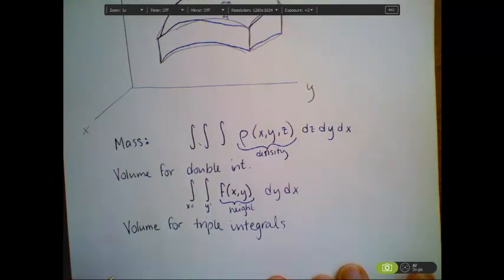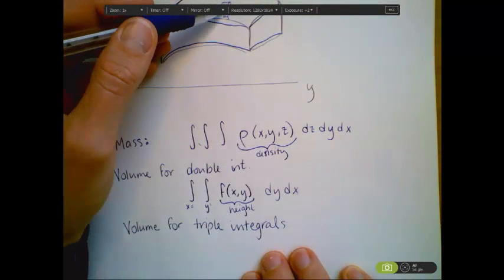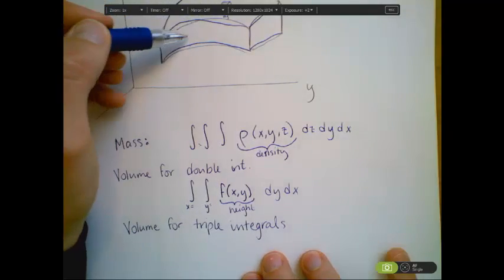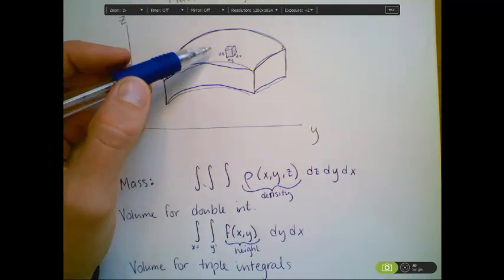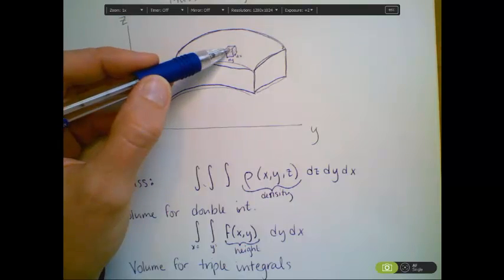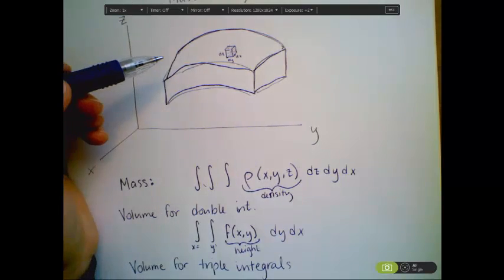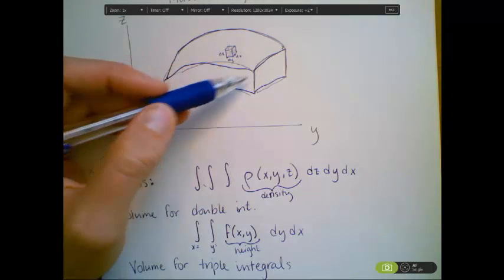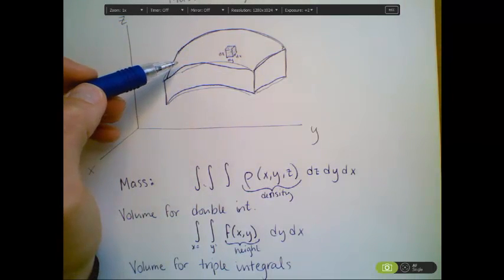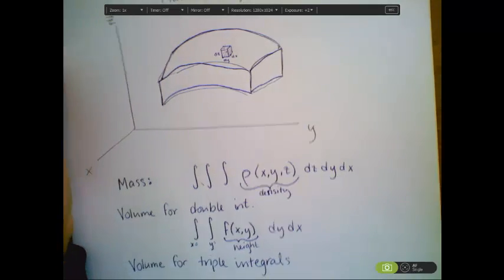Well, a volume using triple integrals, it would mean that I would want to sum up all of the boxes inside of this, but instead of computing how much each of the tiny little boxes weigh, really we would just need to know the volume of each of these little boxes, and then we add up all of the boxes. And one way to think about that is to think of it as a density function of 1.